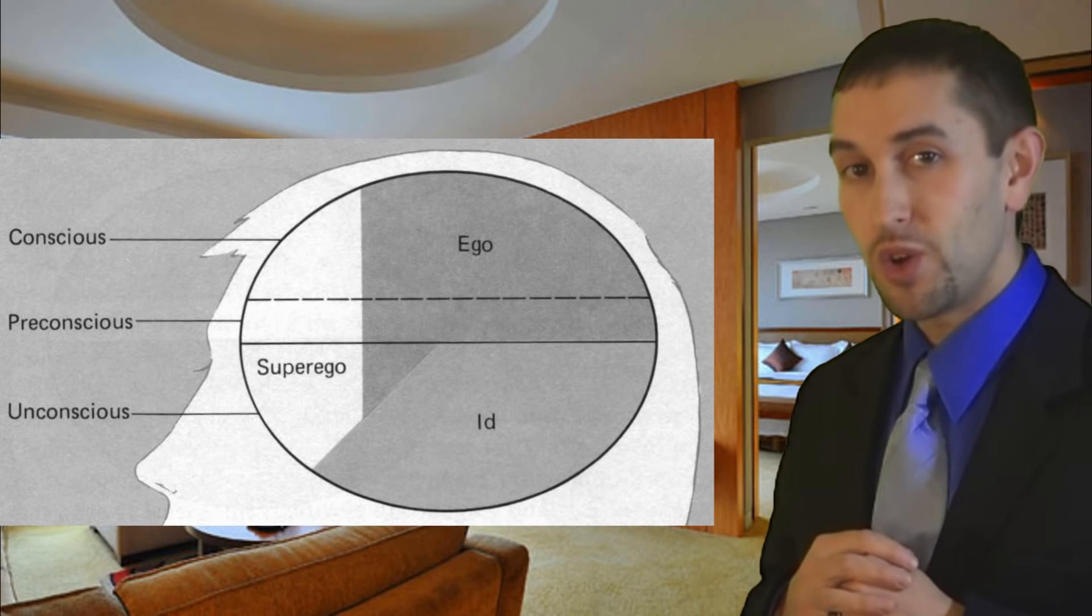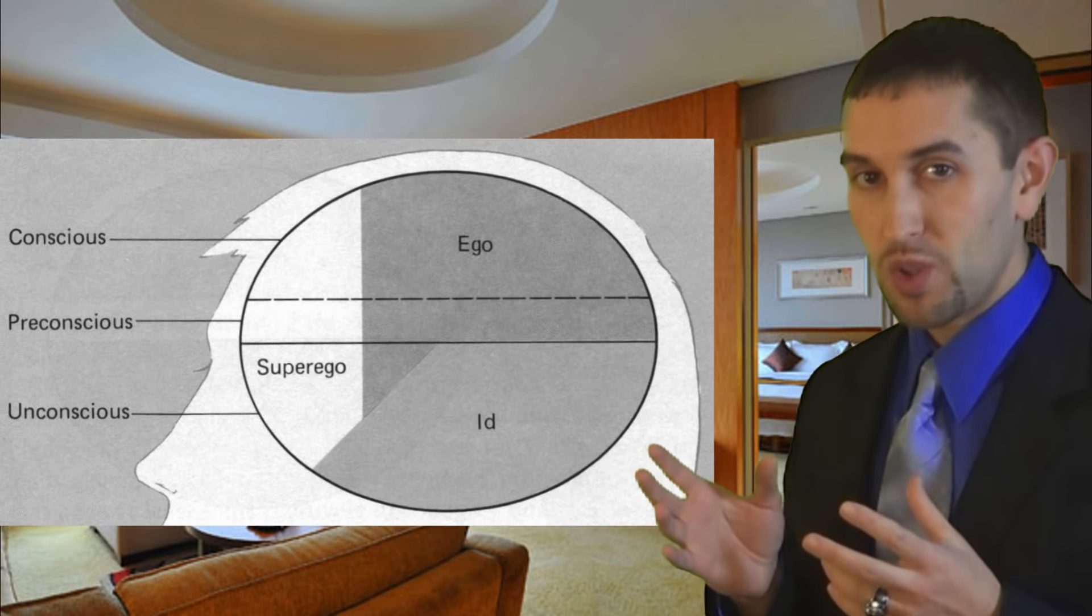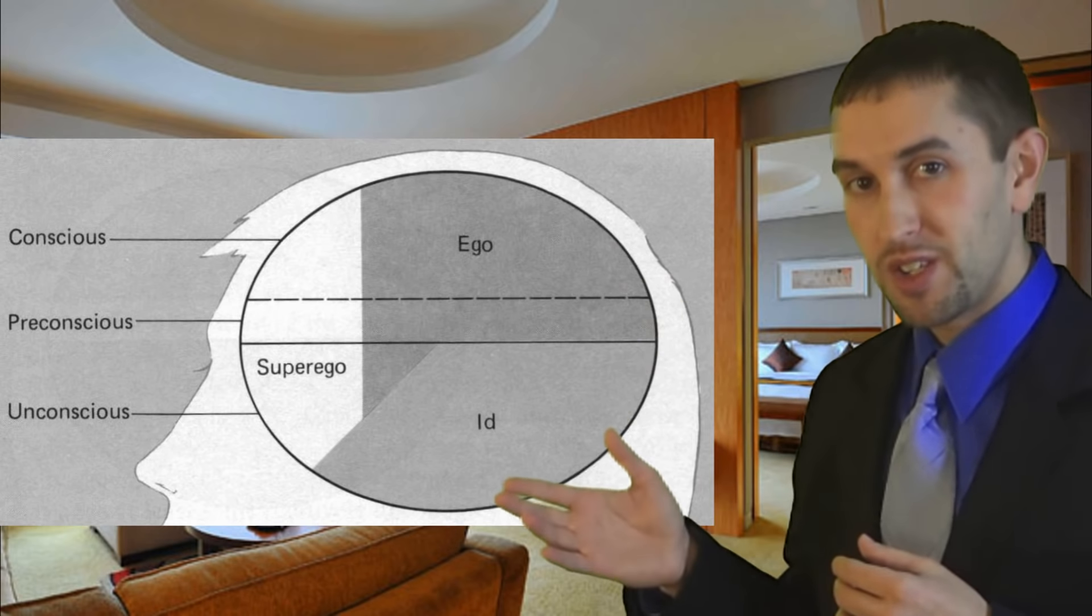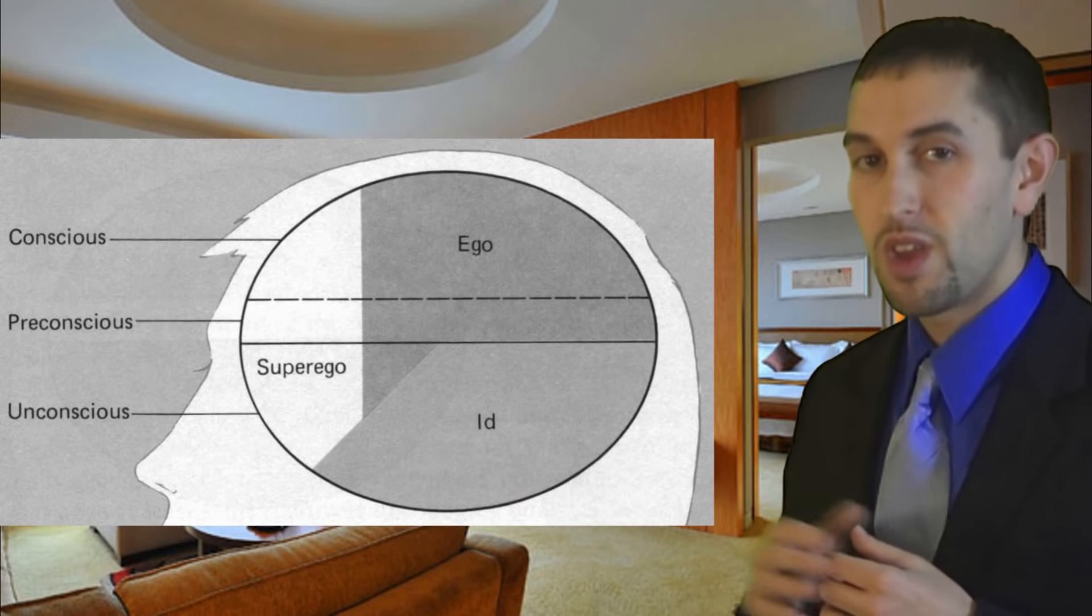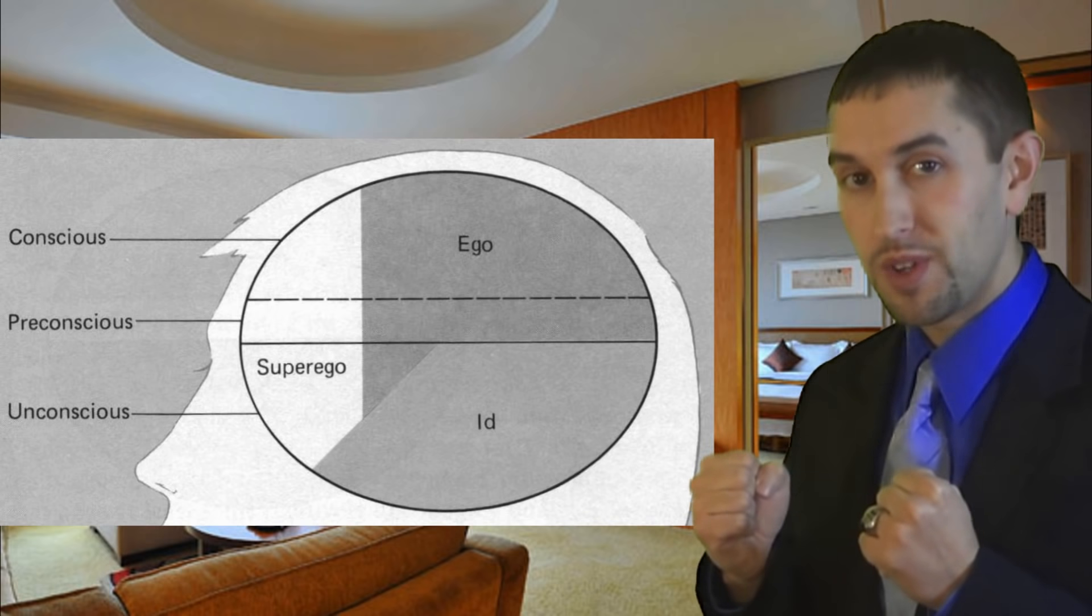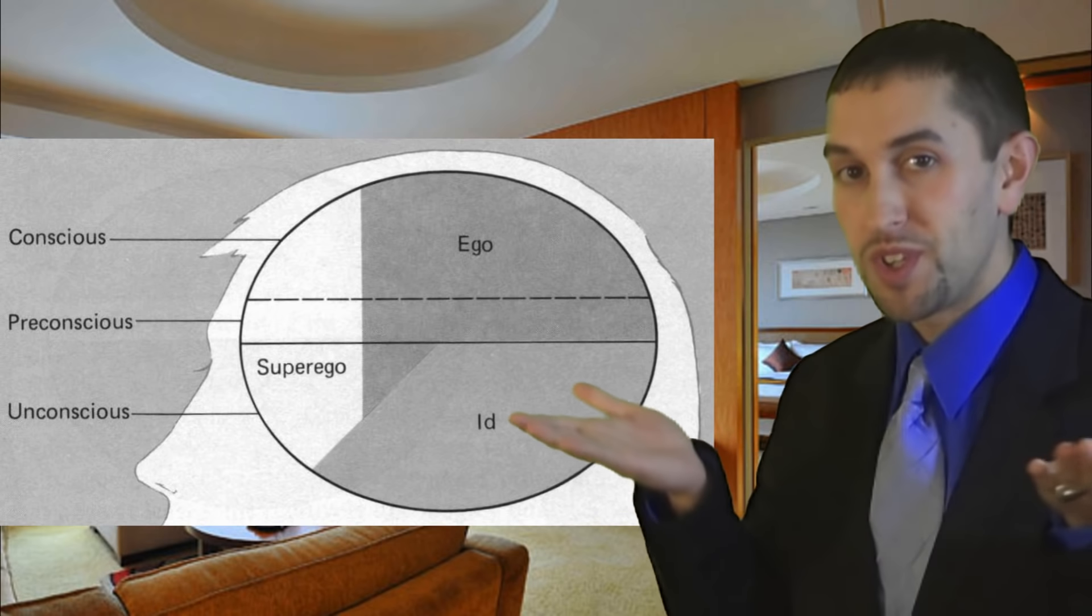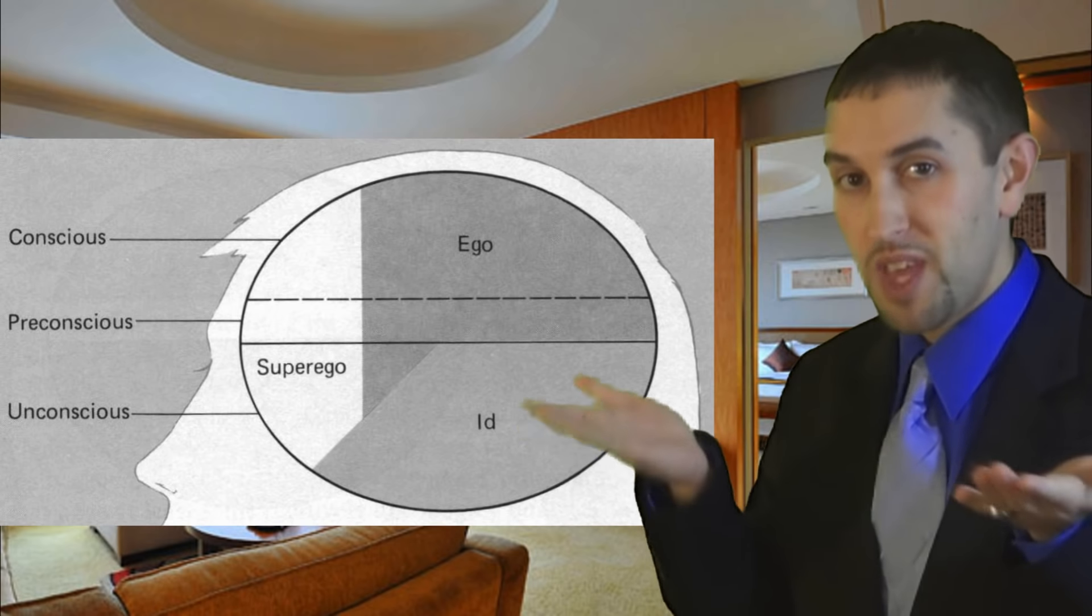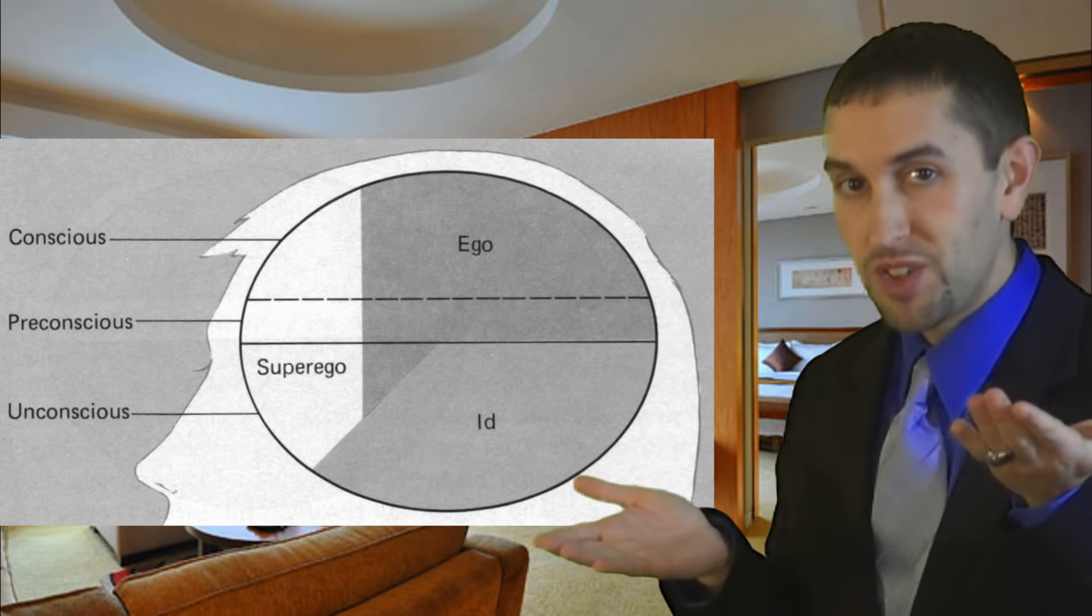Like the ego, the superego is located throughout all three areas of the mind. Freud believed that a mentally healthy person has a strong ego, keeping the id and superego balanced, because if they became imbalanced, mental illness would result.